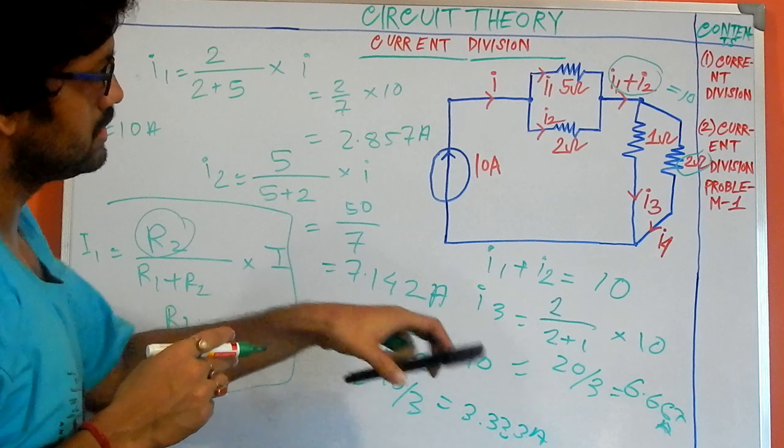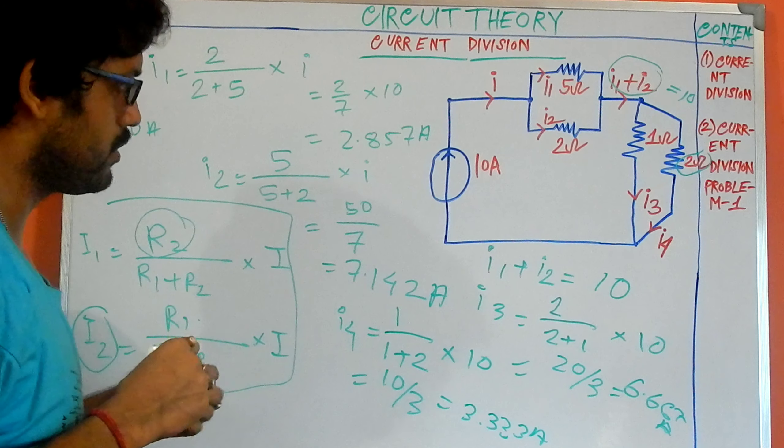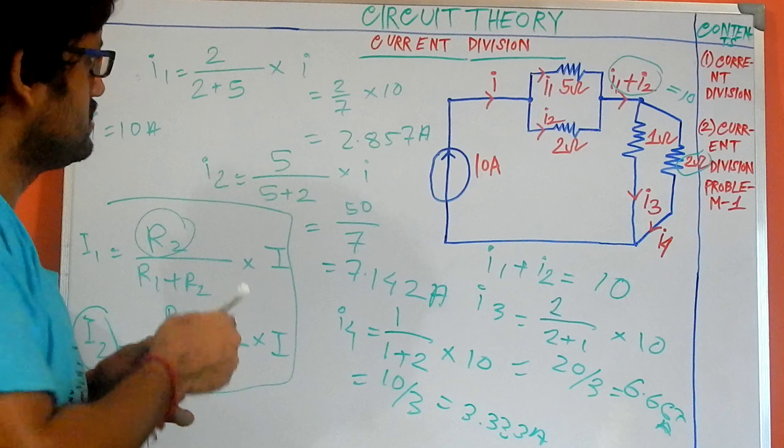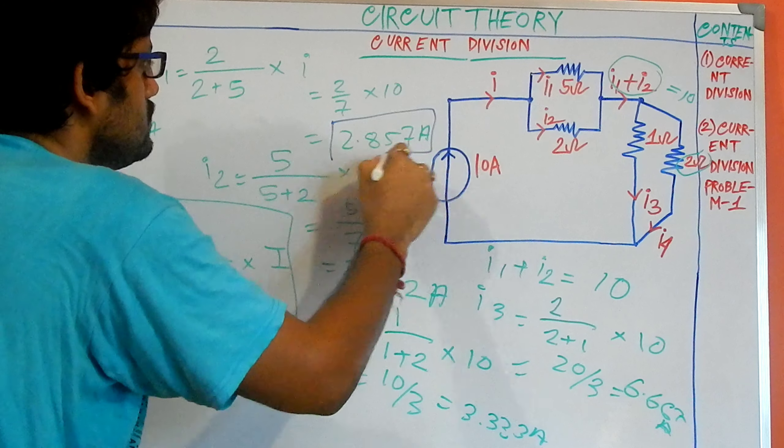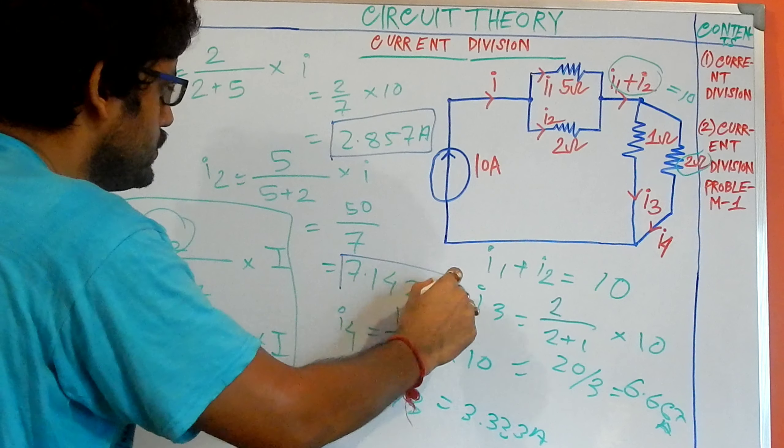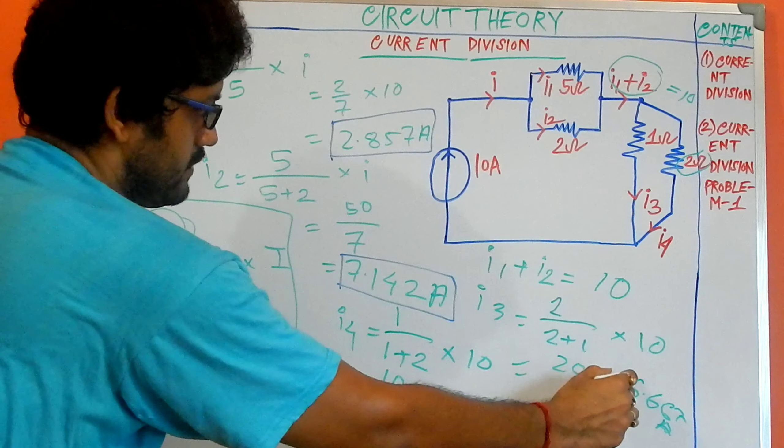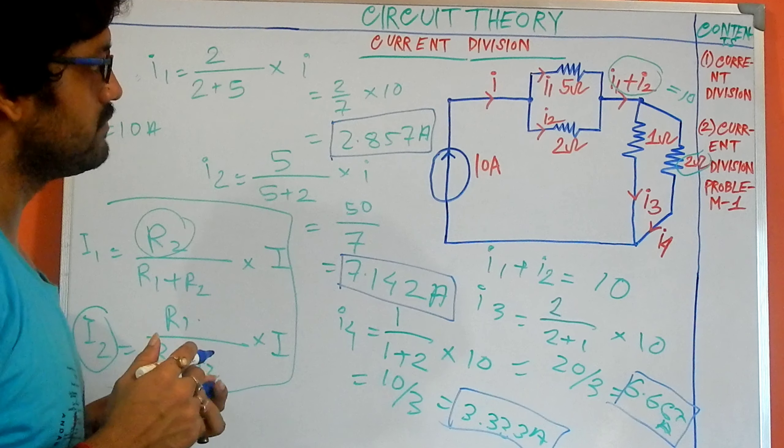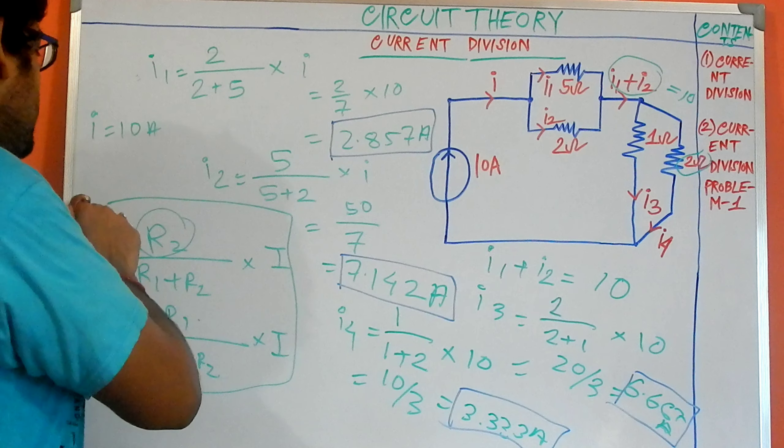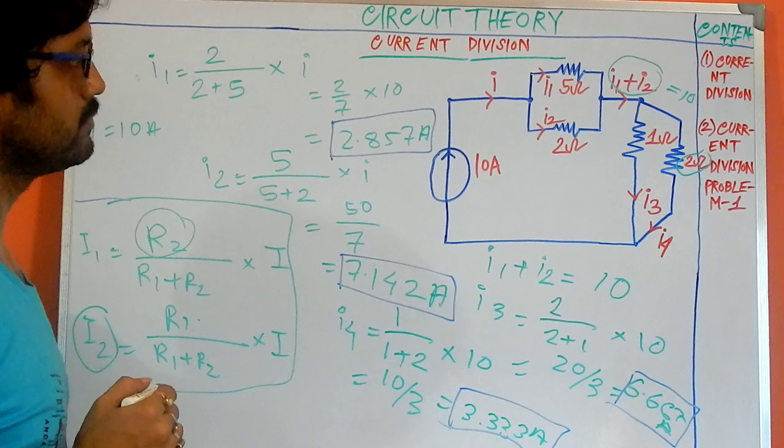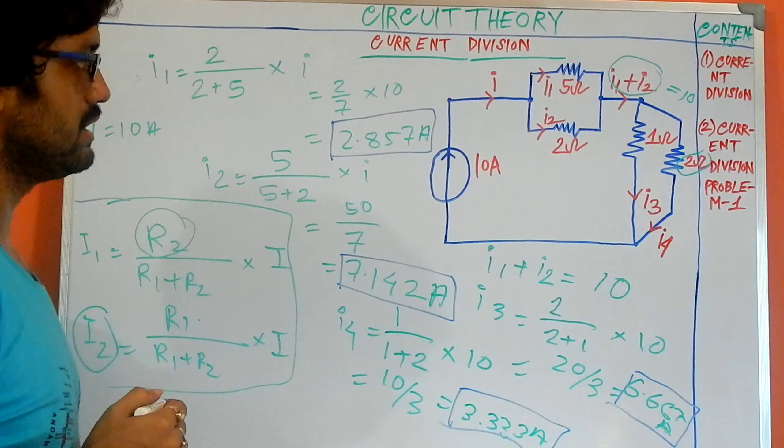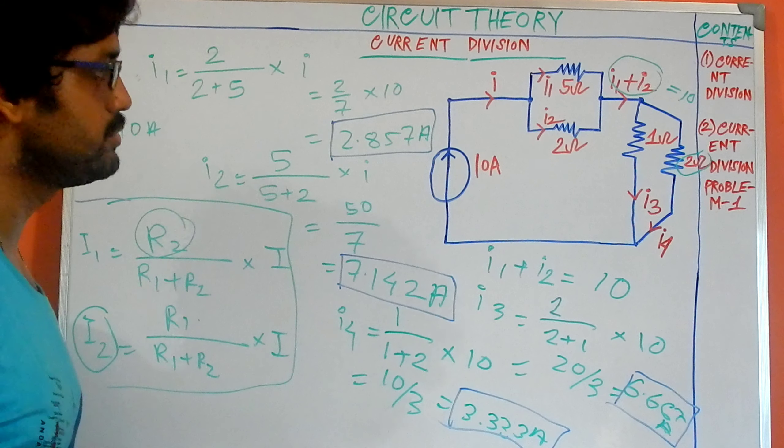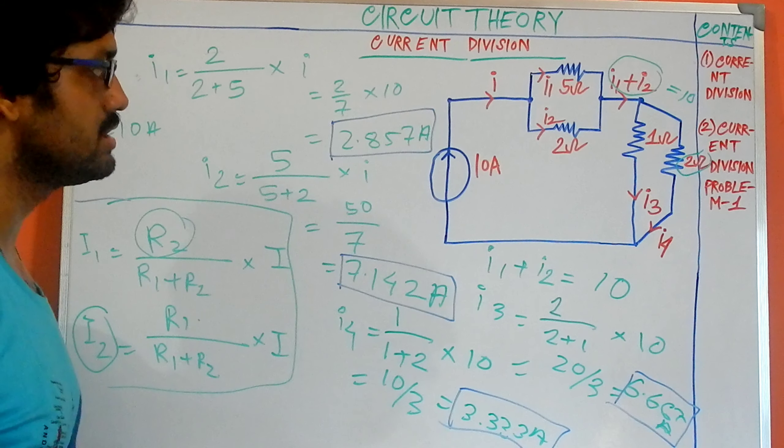So by using our current division method, I have got the value of I1, I2, I3, and I4. This one is the value of I1, this one is I2, this one is I3, and this one is I4. By using the current division formula, and this is the basic formula of our current division formulation to solve current division problems, I hope you have totally understood all these concepts in a more logical and precise way.